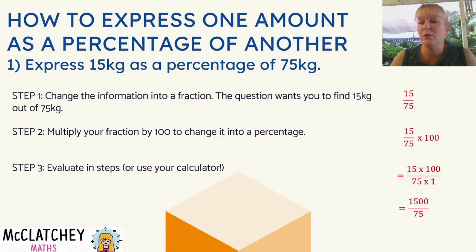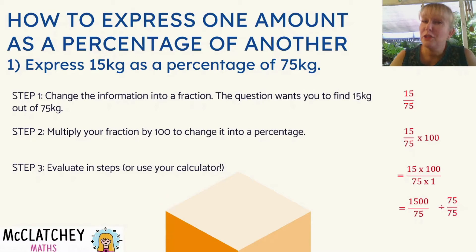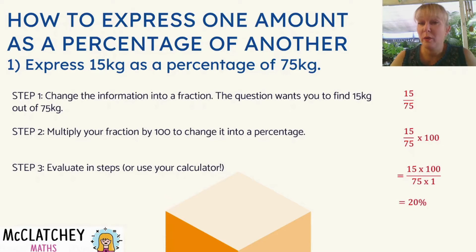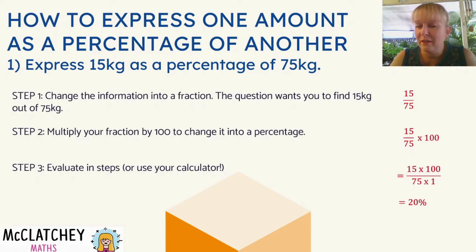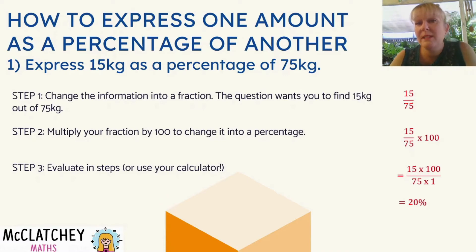We can evaluate this in short steps: 15 times 100 is 1,500; 75 times 1 is 75. We can simplify that further by dividing the top and denominator by 75, and that will give us a percentage of 20%. If you're working it out on paper, you'd have to do some extra work on the side. However, if you're in Year 11 or 12, you can just jump straight onto your calculator — they're not going to expect to see that level of working. So we would simply do 15 divided by 75 on your calculator times 100. You get 20%. A lot quicker!